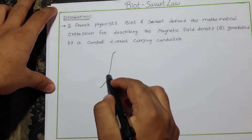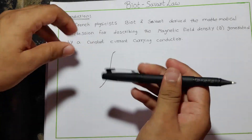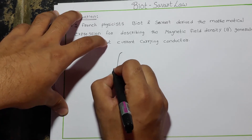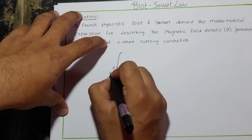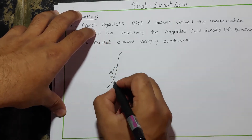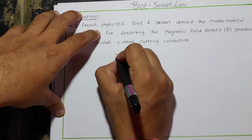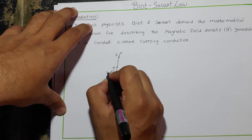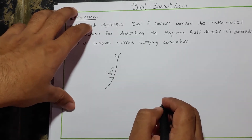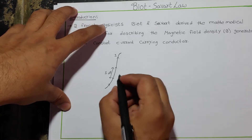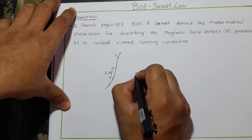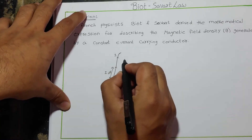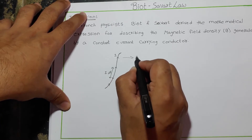Let us consider a long current-carrying conductor wire and a differential element dl of length dl. We know that it is a conductor which conducts the current I, so this differential element would conduct a current of I·dl. Now let us take a point P — a point in the direction of the magnetic field. We know that any current-carrying conductor would apply a magnetic field around it.